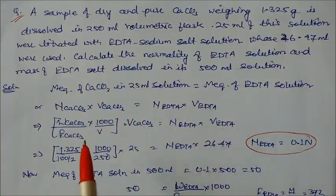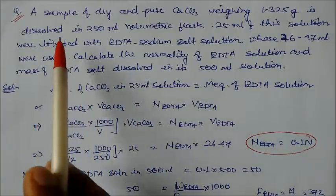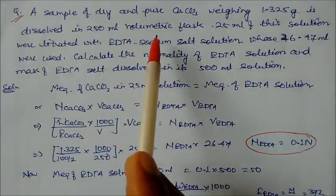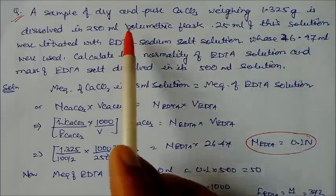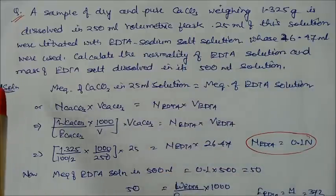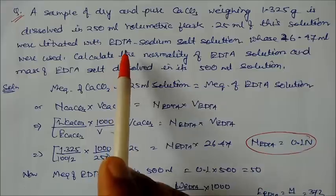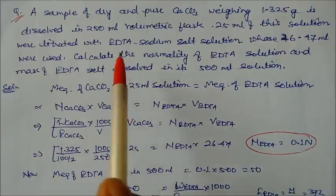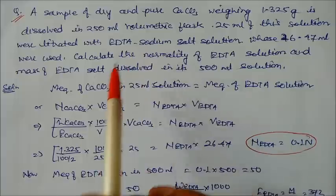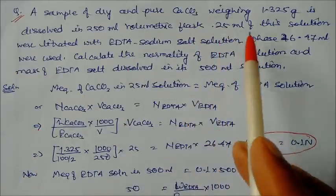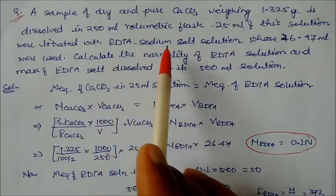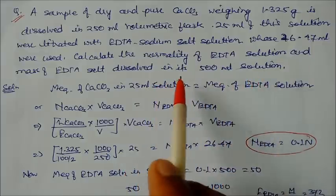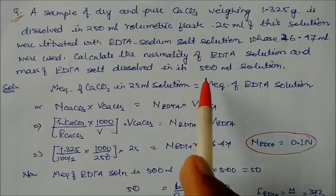Now let us see a problem on complexometric titration. A sample of dry pure calcium carbonate weighing 1.325 grams is dissolved and made up to 250 ml in a volumetric flask. 25 ml of this solution is titrated with EDTA; 26.47 ml of EDTA sodium salt solution is used. Calculate the normality of the EDTA solution and the mass of EDTA salt dissolved in 500 ml of water.